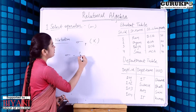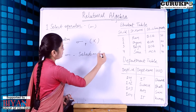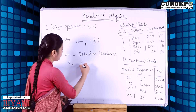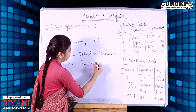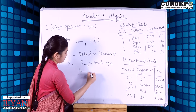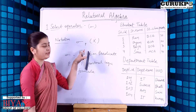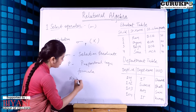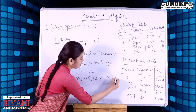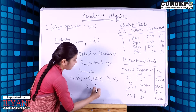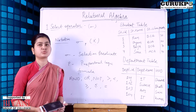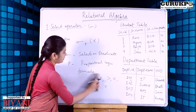In the notation sigma_p(X), sigma is the selection predicate, and p is a propositional logic formula appearing as a subscript. It may use various connectors like AND, OR, NOT, less than, greater than, less than or equal to, greater than or equal to, and equal to. The select operator is used to select a tuple from a given relation.